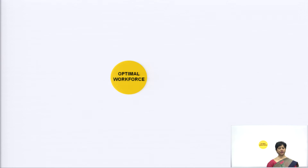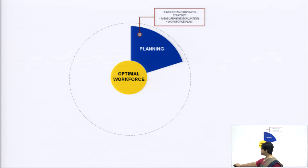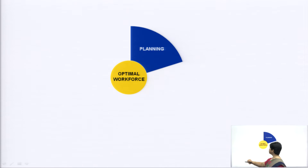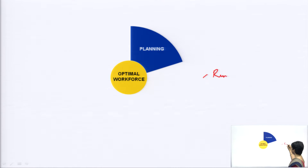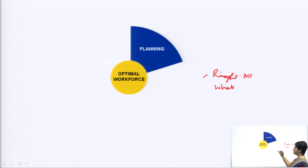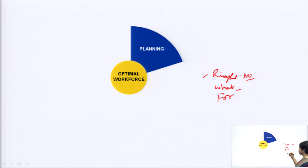When we talk about talent management, the most important thing we need to look forward to is the optimal workforce required in the organization. We need to understand what kind of workforce we require — whether we have the right number of people and what qualities we look for in these employees. HR planning is mainly about identifying the right number of people, the qualities required, and the key roles for which we need to hire.